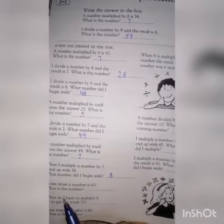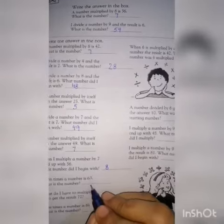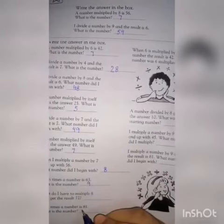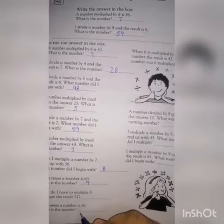Seven times a number is 63. What is the number? The number is nine. Seven times nine is 63.